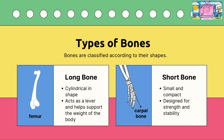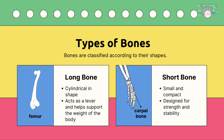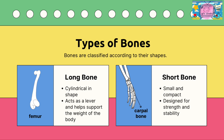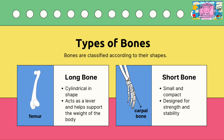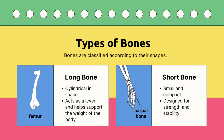Types of bones: bones are classified according to their shape. The femur is a long bone, cylindrical in shape, acting as a lever and helping support the weight of the body. Cuboid bones are small and compact, designed for strength and stability.